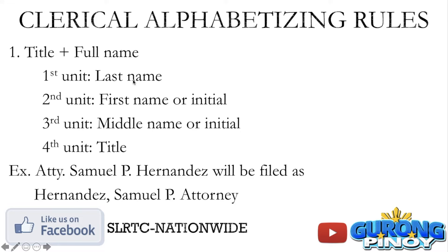So the last name or family name comes first, followed by the first name, then the middle initial and the title. That's our first rule for clerical alphabetizing.